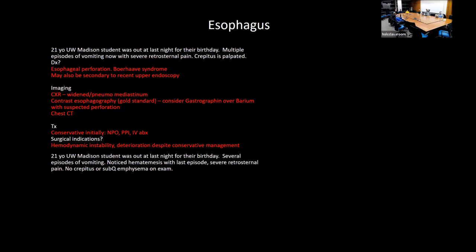A similar patient with vomiting, now with hematemesis on the last episode but no crepitus or subcutaneous emphysema — that's Mallory-Weiss tear. Diagnosis is by endoscopy (unlike perforation where scope risks worsening). Treatment is conservative: antiemetics to prevent further vomiting and PPI.